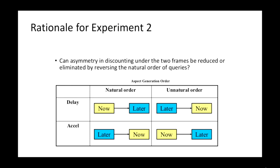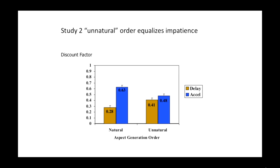If the order in which we issue queries makes a difference, maybe we can manipulate it. In the delay condition, we told people to explicitly generate arguments for immediate consumption first — the natural order seen in the previous study — or we reversed the order. The difference between delay and acceleration seen in the natural order should become smaller or even reverse in the unnatural order. Results show that in the natural order condition we replicate previous results, but that difference becomes non-significant in the unnatural order generation.